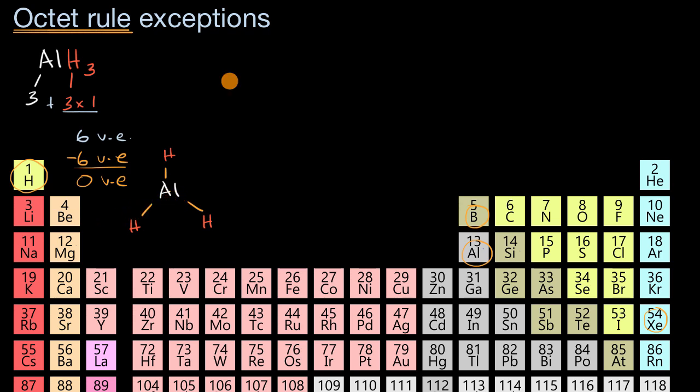Let's think about another example. Let's think about xenon pentafluoride cation - positively charged ion here. Pause this video and see if you could draw the Lewis diagram for this. All right, now let's do this together.